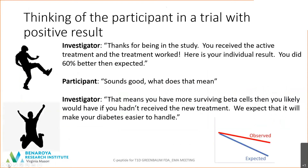One could think about the conversation you would have with a participant. Instead of saying 'your C-peptide at one year is X,' you could tell them how they did compared to how they were expected to do. Investigator: 'Thanks for being in the study. You received the active treatment and the treatment worked. Here is your result — you did 60% better than expected.' Participant: 'Great, what does that mean?' 'It means you have more surviving beta cells than you likely would have if you had not received the new treatment, and we expect that will make your diabetes easier to handle.' So a much more meaningful outcome for a participant is how they did with therapy compared to how they might have been expected to do without it.